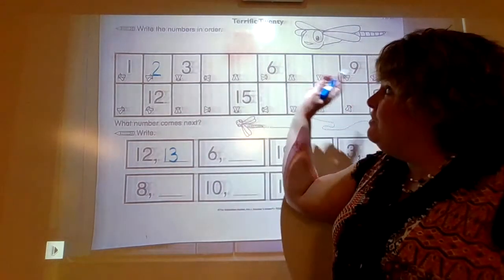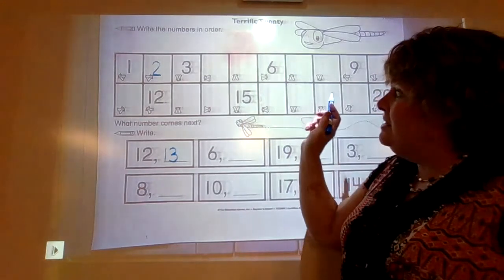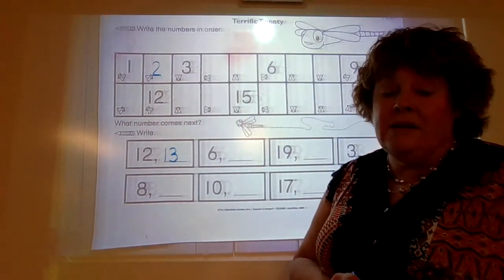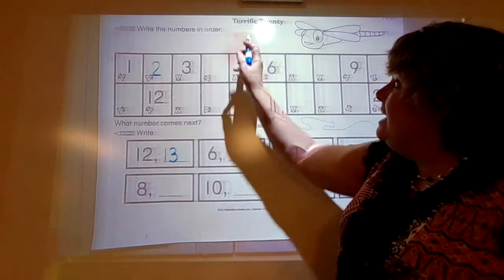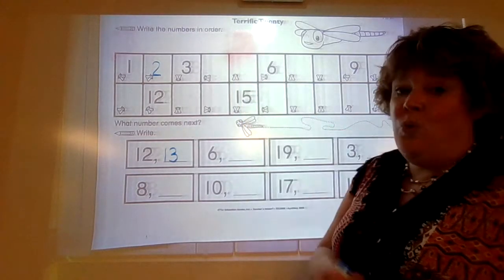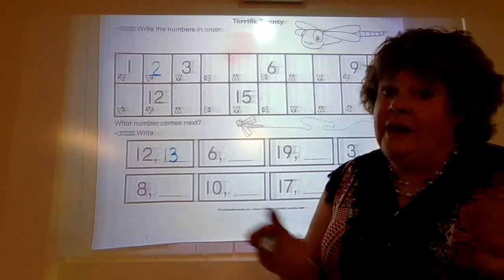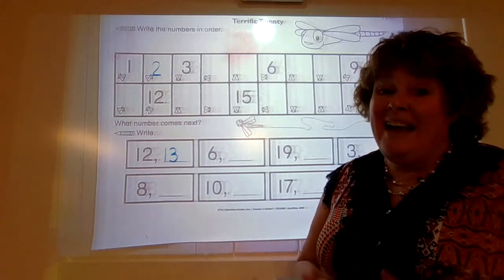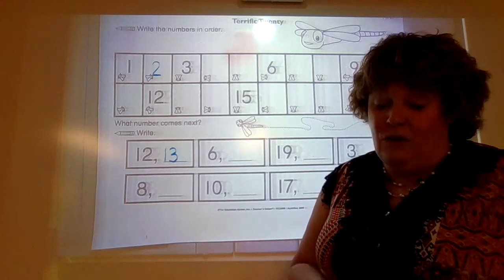So you're going to fill up the top, and you're going to write what comes next. And this is called the Terrific 20. You're only going to need your pencil and your paper. It probably will not take you very long.